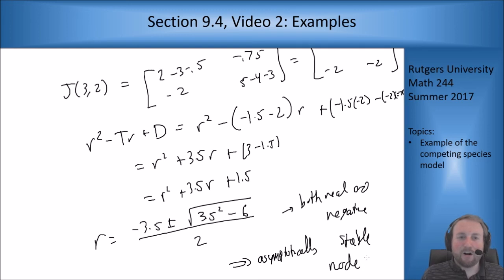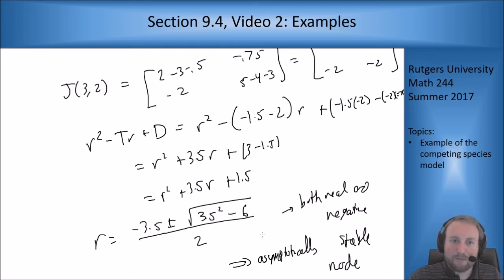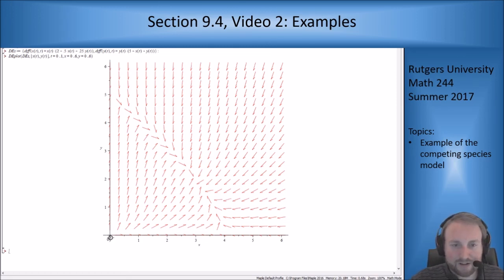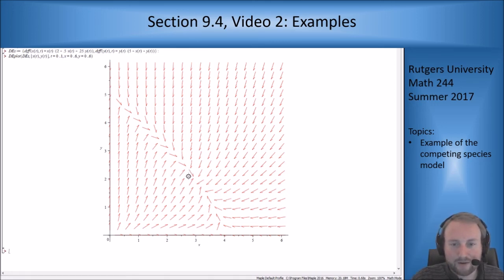So we got what we wanted. All the other critical points were unstable — either unstable nodes or saddle points — and this intersection point came out to be a stable node, which we expected from our nullcline analysis. Let's jump to Maple real quick and see what Maple says. Maple agrees: unstable node at (0,0), saddle point at (0,5), saddle point at (4,0), and an asymptotically stable node with all curves flowing in to our point at (3, 2).